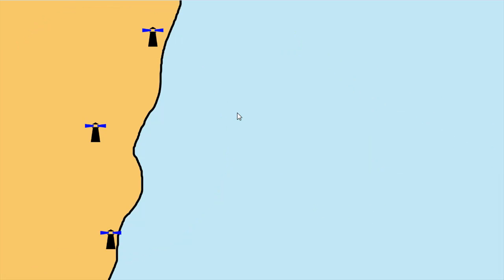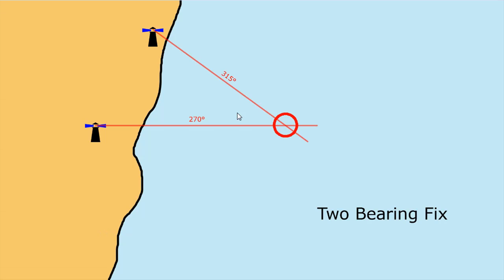To take a fix is the next step. A fix is simply a combination of multiple position lines. So if you have two position lines — one lighthouse bearing 315 degrees and another bearing 270 degrees — you can draw those on your chart and get an intersection. That intersection is known as a fix and is a fairly accurate representation of your position. It's called a two-bearing fix.